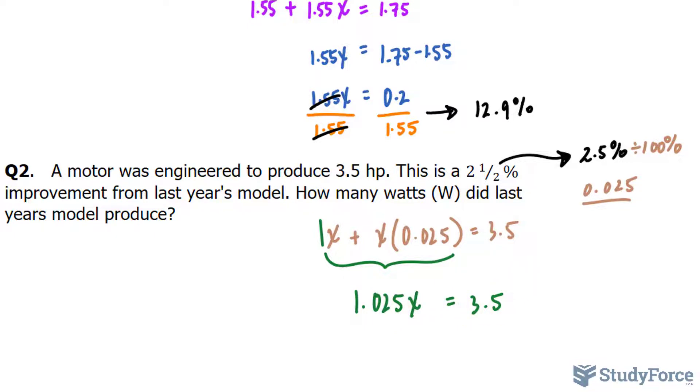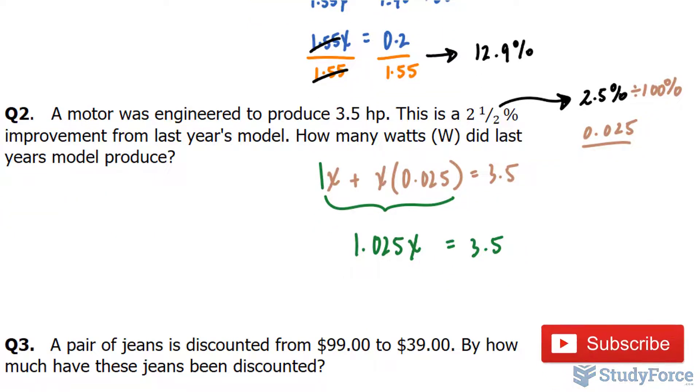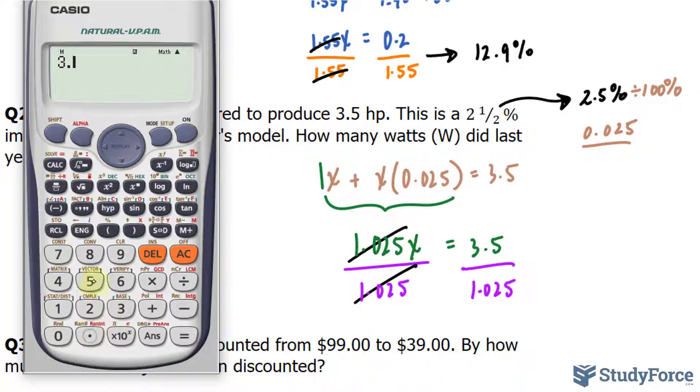And on the right side, we have 3.5. By solving for x here, we have found what it was initially, the amount of power last year. So, again, using the same technique as before, I will divide both sides by this, the number right here. They cancel out, and this time we have 3.5 divided by 1.025 makes 3.41463.